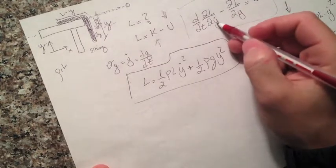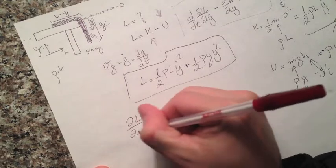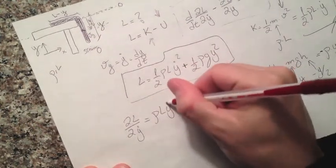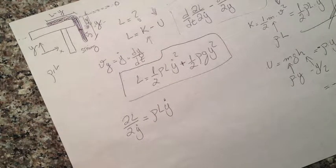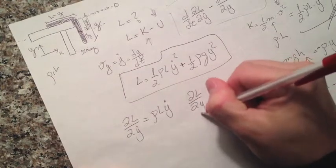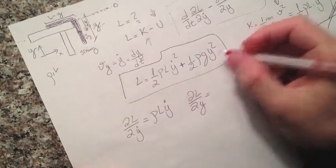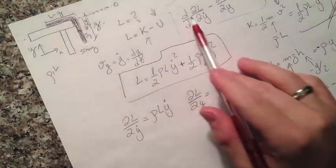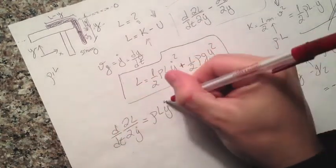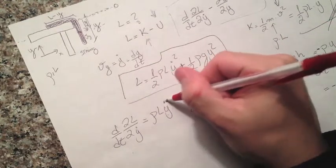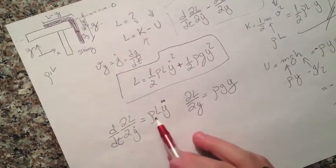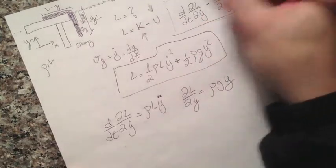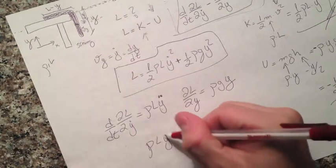Let's apply the Euler-Lagrange equation. First we compute the derivative of the Lagrangian with respect to Ẏ. Then we take the time derivative of that result. We also compute the derivative of the Lagrangian with respect to Y. Since rho and L are constants, this gives us one more time derivative of Y.